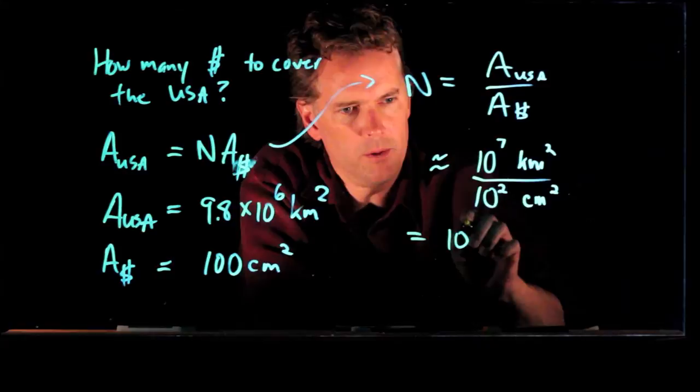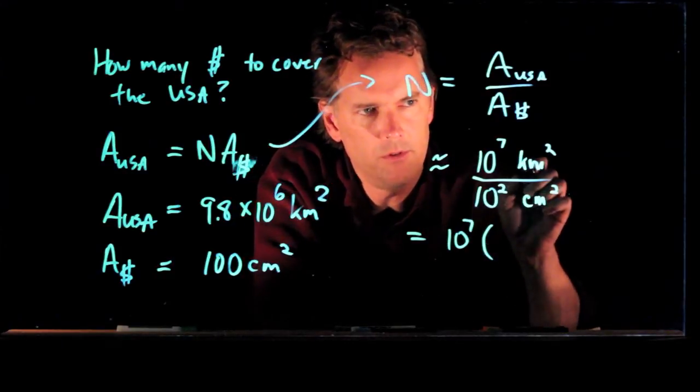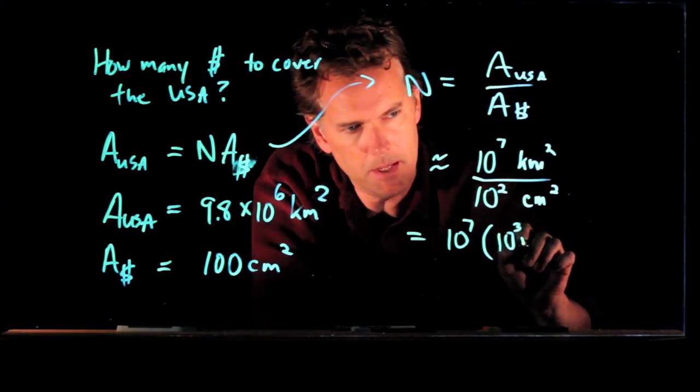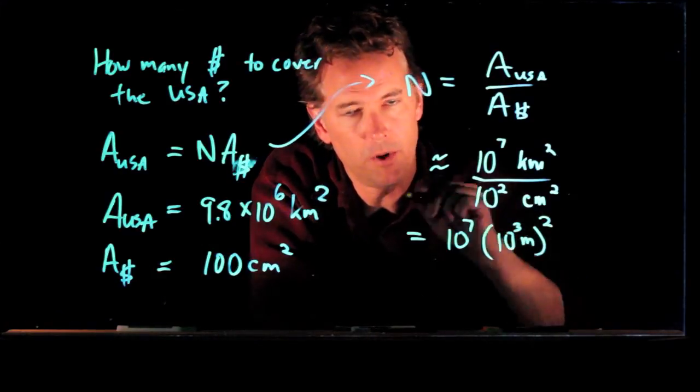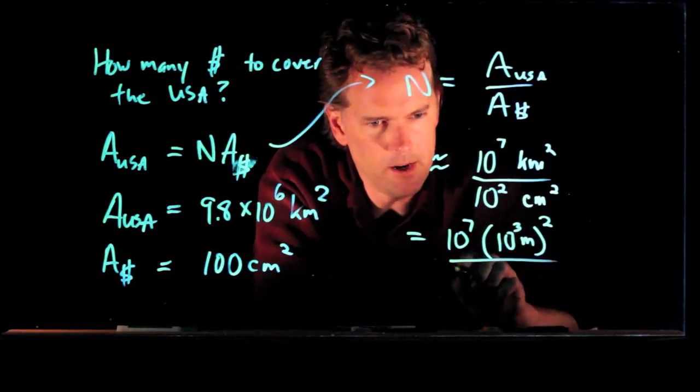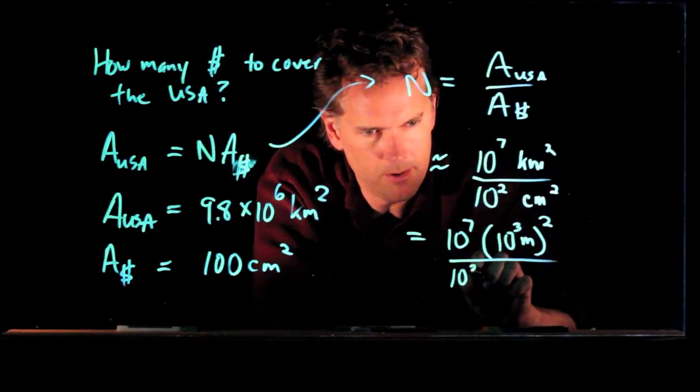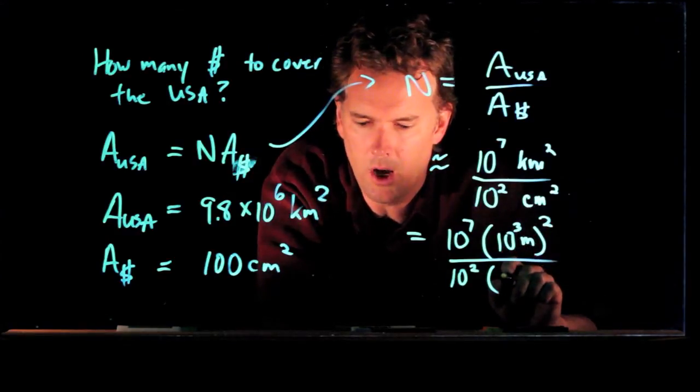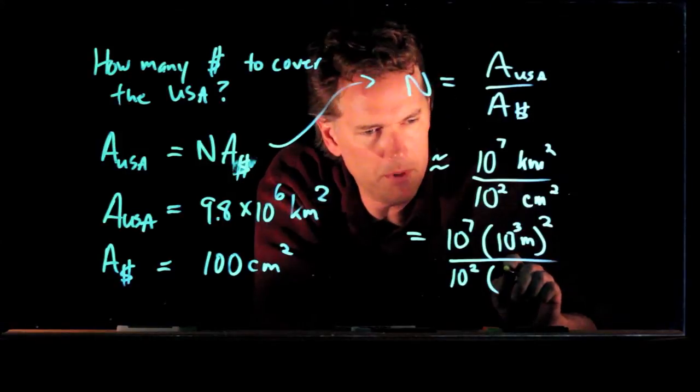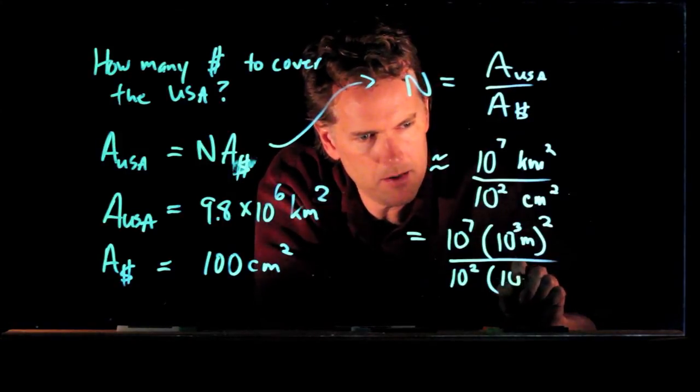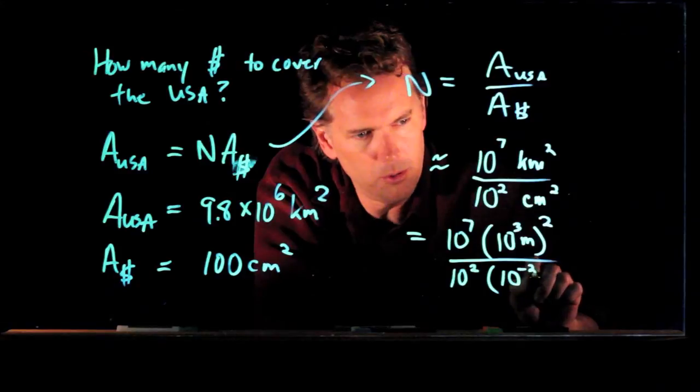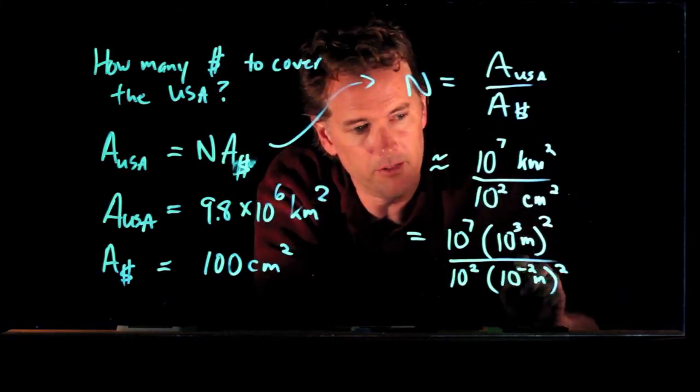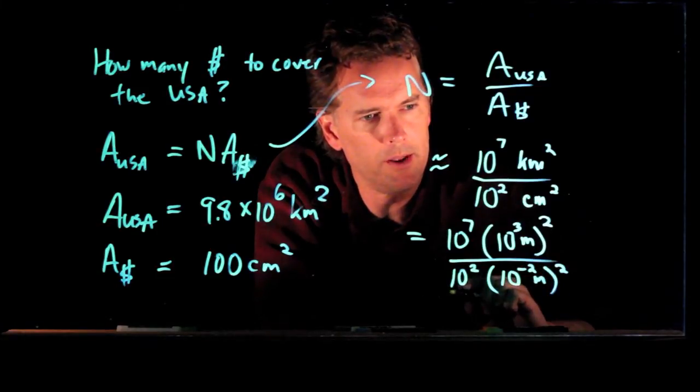If we do that, what do we get? We get 10 to the 7 times a kilometer is, in fact, 10 to the 3 meters, and we're going to square that whole thing. Down in the bottom, we have centimeters. How big is a centimeter? Well, there's 100 centimeters in a meter, so that is 10 to the minus 2 meters, right? A centimeter is much smaller than a meter. It's a hundredth of a meter, and so we got to put that number in right there.